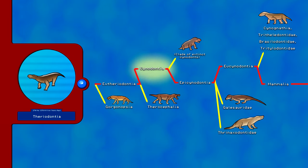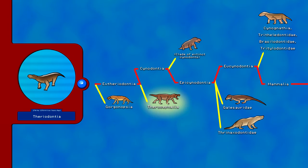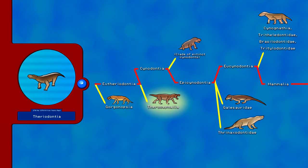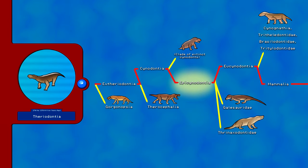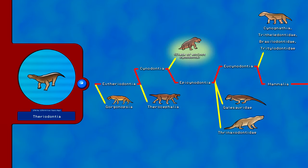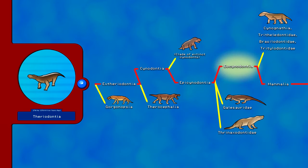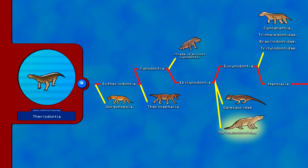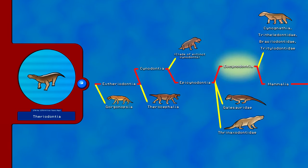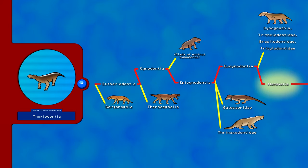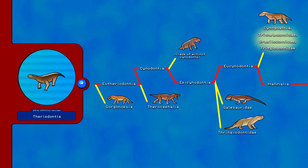Eutheriodontia includes Acinodonts and Therocephalians — nicknamed the Beast Heads — and includes species like Pristerognathus and Moschorhinus kitchingi. Cynodontia branched to include Epicynodontia and several extinct therapsids such as Terracanthus and Trithelodontids. Epicynodontia branched to include Eucynodontians, Galesaurids, and Thrinaxodontids. Then Eucynodontia branched to include Mammaliaforms, Sinonathians, Tritheledontids, Brasilodontids, and additional Trithelodontids.